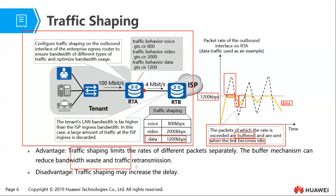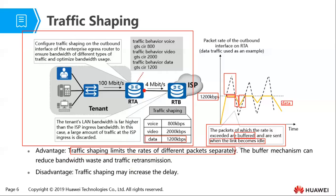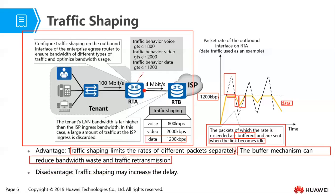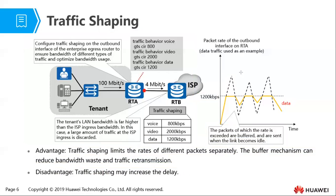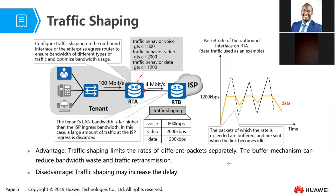The advantage of traffic shaping is that it limits rates of different packets separately, and the buffer mechanism reduces bandwidth wastage and traffic retransmission because packets are not discarded. The disadvantage is that buffering may increase delay, making it less suitable for delay-sensitive traffic.